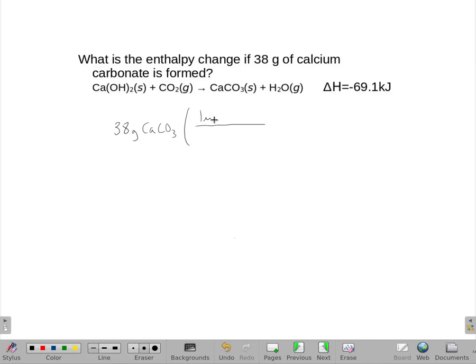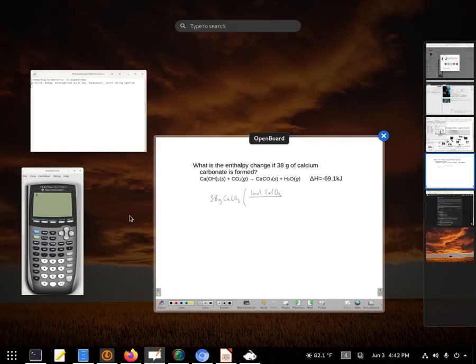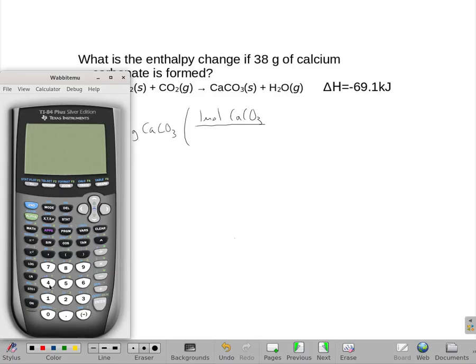So we need to get the molecular weight of calcium carbonate. Well, that's easy enough. We have our periodic table, and we have a calculator. So calcium is 40.08 grams.